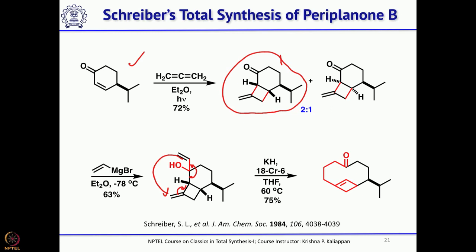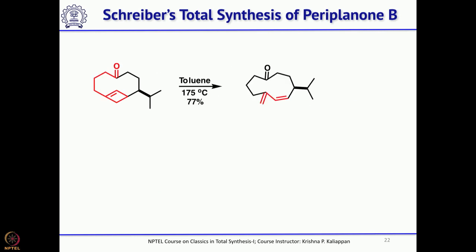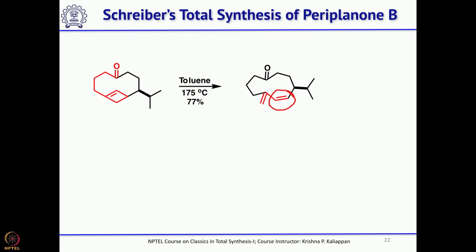The 10-membered ring is fused with a 4-membered ring. This 4-membered ring — the cyclobutene — when heated forms the diene. Unfortunately, this gave a cis double bond. When he did the ring-opening reaction, he got an exocyclic double bond and the internal double bond was cis, but in the natural product the internal double bond is trans. Of course, cis-trans isomerization can be done easily under photochemical conditions, so he tried that and could easily isomerize the cis double bond to trans.